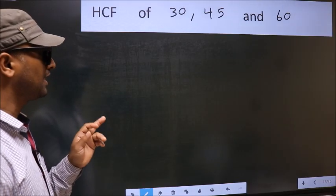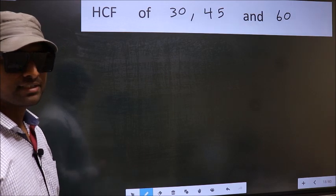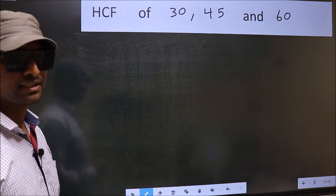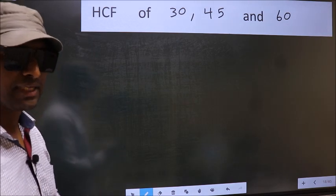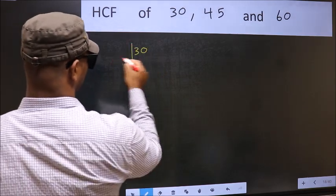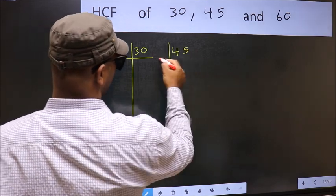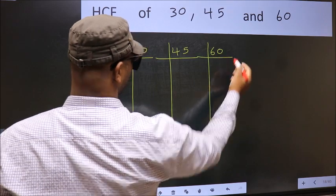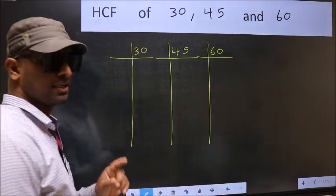HCF of 30, 45 and 60. To find the HCF, we should do the prime factorization of each number separately. What I mean is 30, 45, 60. This is your step 1.